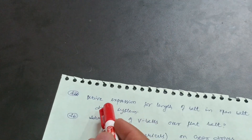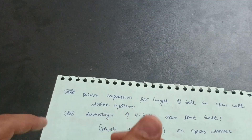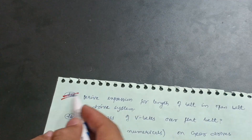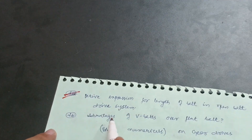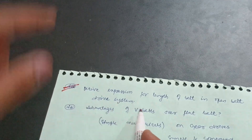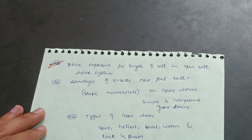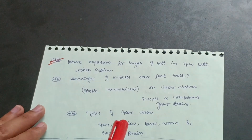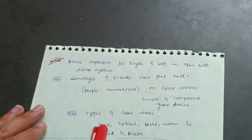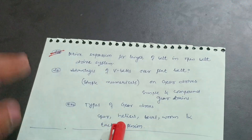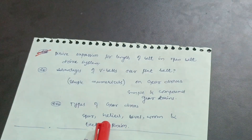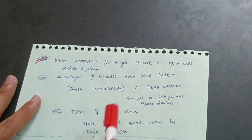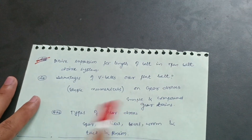In Module 4, also focus on deriving the expression for the length of belt in an open belt drive system — this is the most important derivation. Cover advantages of V-belts over flat belts, and solve some simple numericals on gear drives.